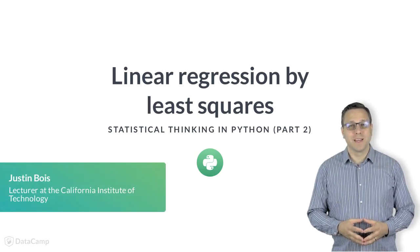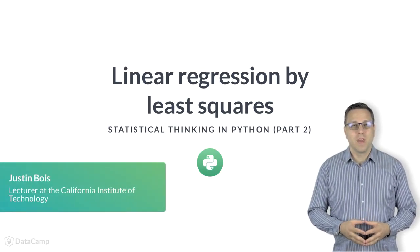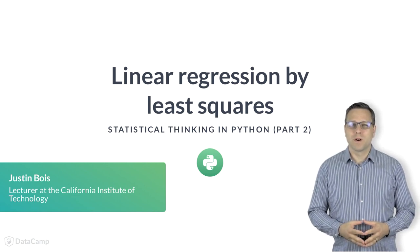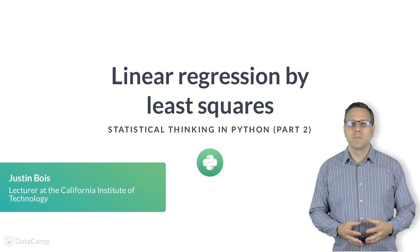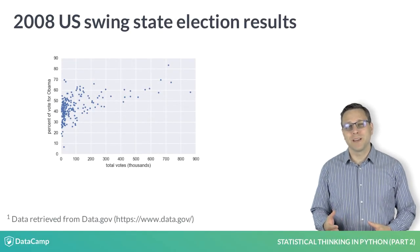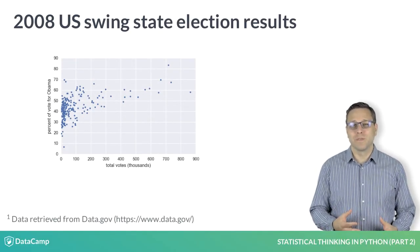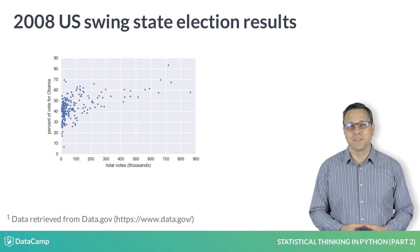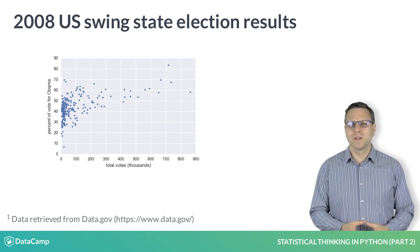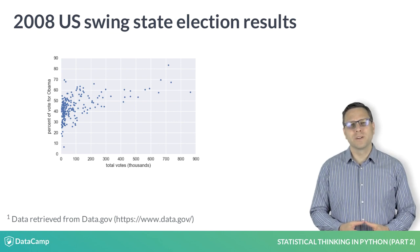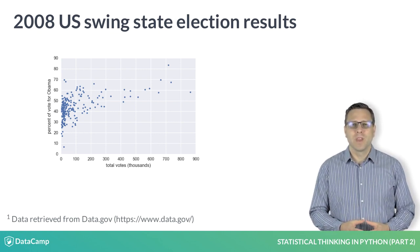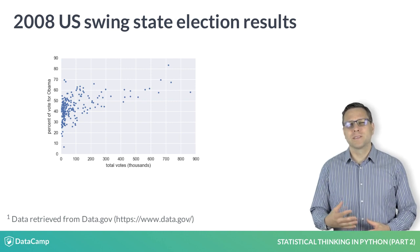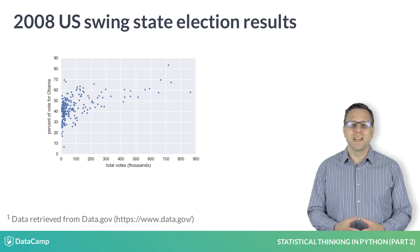Sometimes two variables are related. You may recall from the prequel to this course that we computed the Pearson correlation coefficient between Obama's vote share in each county in swing states and the total vote count of the respective counties. The Pearson correlation coefficient is important to compute, but we might like to get a fuller understanding of how the data are related to each other. Specifically, we might suspect some underlying function gives the data its shape.